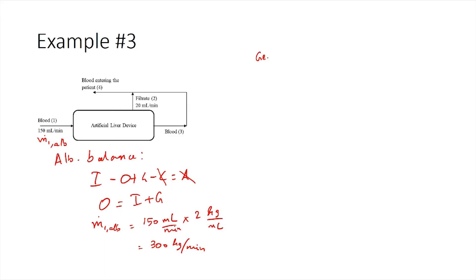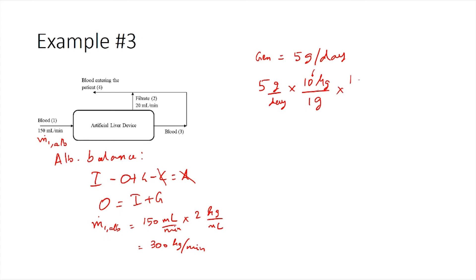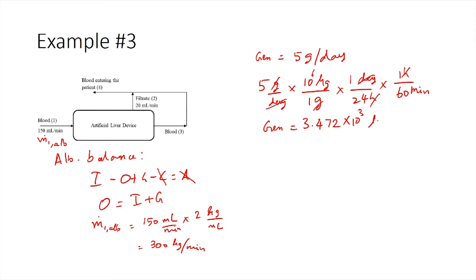The generation term is given as 5 grams per day and needs to be converted to micrograms per minute. Converting: 5 g/day × 10⁶ micrograms/g × 1 day/24 hours × 1 hour/60 minutes. Cancelling days, grams, and hours gives micrograms per minute. The result is: generation = 3.472 × 10³ micrograms per minute.